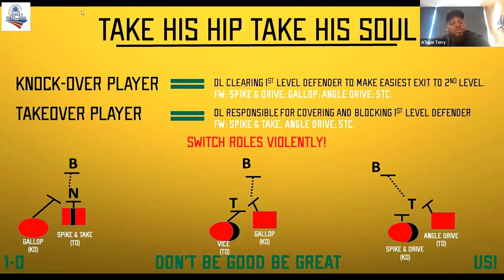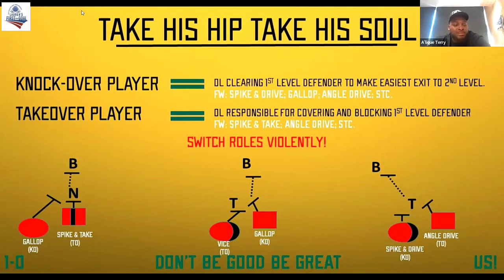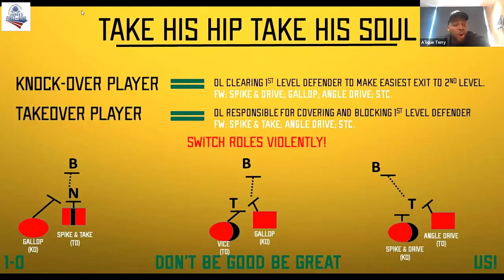The takeover player is the O-lineman responsible for covering and blocking the first level defender. For us, it varies a little bit. When there's a tight three-tech, the guard is now thinking spike and take — not spike and drive — working his double with the backside tackle. My backside knee isn't going to be as vertical north; I'm going to shorten it a little bit, providing space for when the knockover player knocks it over, so I'm clearly defined and taking it exactly where I want to go — working with each other, not against each other. Then on the angle drive, the tackle will be the takeover player — if the guard was spike and driving and getting half a defender, the tackle angle drives to take over that defender, whether working a deuce to the backside linebacker or a B concept.